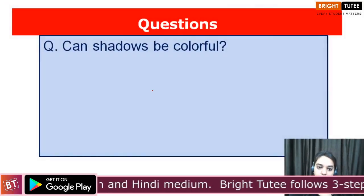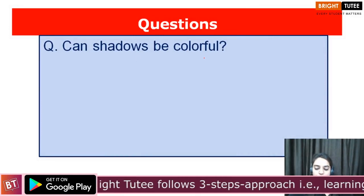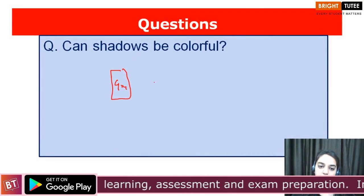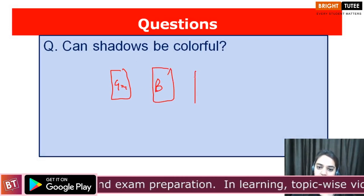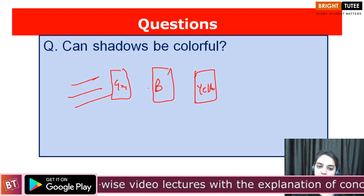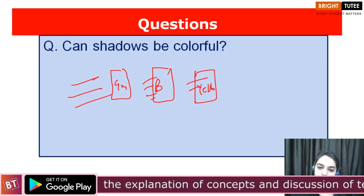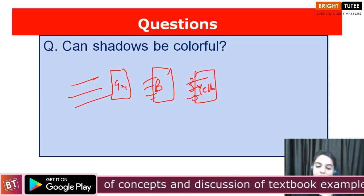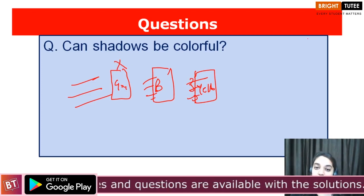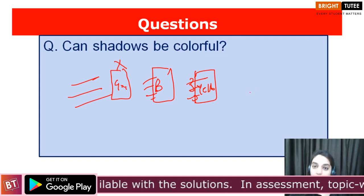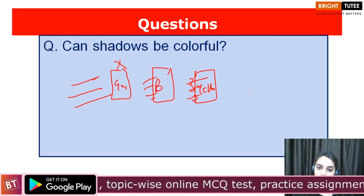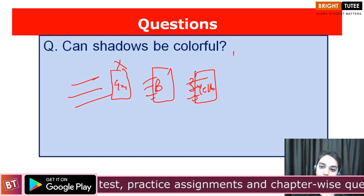Can shadows be colorful? If you take a green notebook, then a blue notebook, then a yellow notebook, and place them all in the path of sunlight, observe the shadows obtained in each case. You will observe that the color of the shadow does not depend on the color of the object. Because shadows are the region of darkness where light has not reached, they have no relation to color whatsoever. So shadows cannot be colorful — the color of shadows is only black.